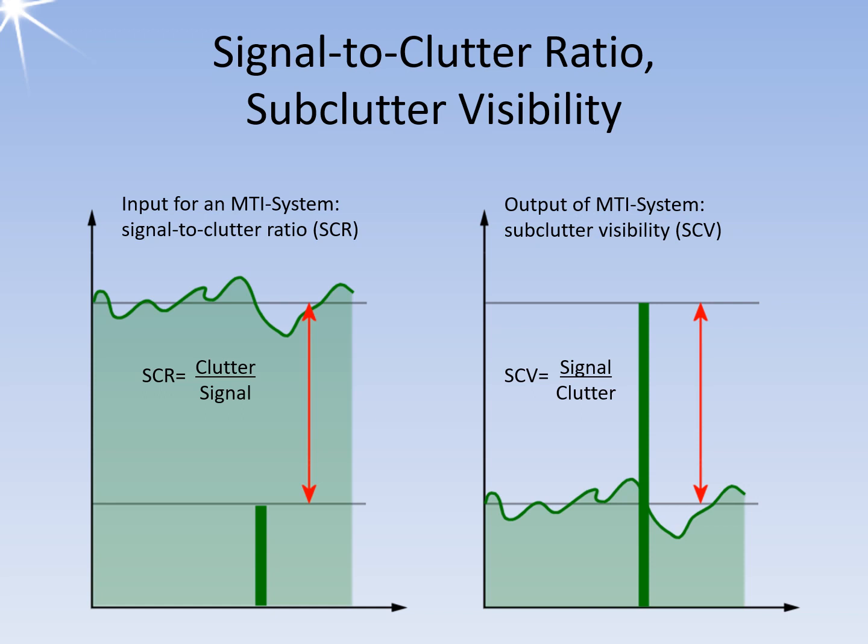Subclutter visibility, SCV, is a technical term that refers to the ability of radar to detect moving targets in the presence of interference from fixed clutter. It measures the radar's ability to detect moving targets in a strong background of interference from clutter for a certain probability of detection and false alarm rate. For instance, a subclutter visibility of 20 decibels implies that the clutter signal can be 100 times stronger than the echo signal of the moving target while still allowing the radar to detect that target and generate a target sign. MTI or MTD systems' performance is often measured using subclutter visibility.